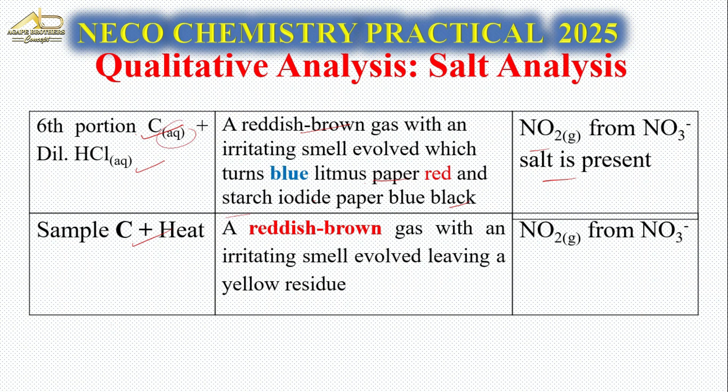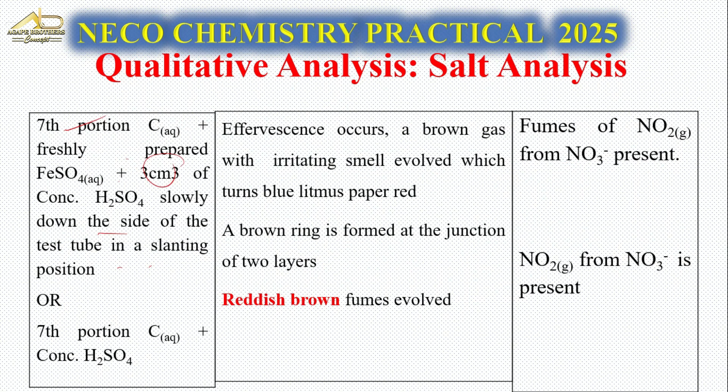If you heat solid sample C, a reddish-brown gas with an irritating smell evolves, leaving a yellow residue. The yellow residue is PbO, and the gas is NO₂, evolved from NO₃⁻ ion present in the salt.